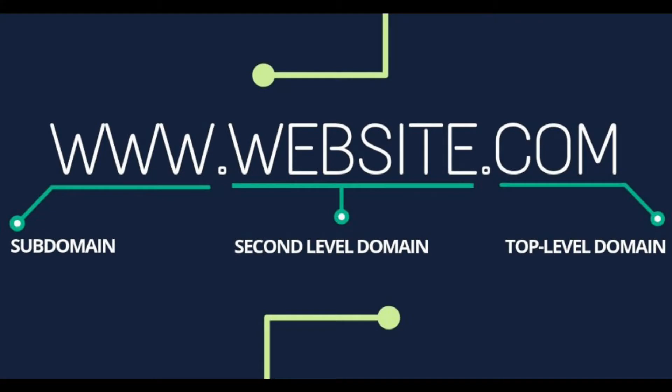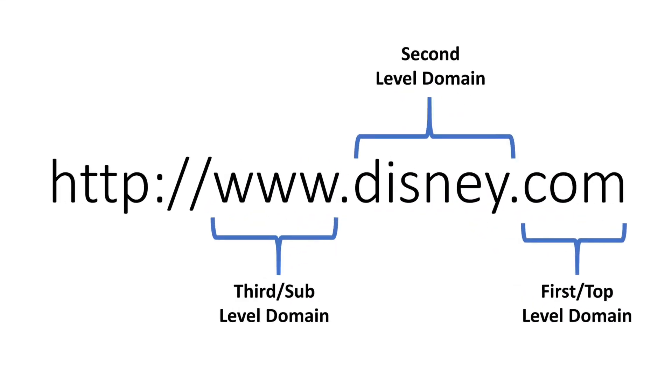So that covers first level or top level domains. Next up is second level domains. Domains of the second level are domains that follow the first level or top level domain in the hierarchy. For example, the 'Disney' in Disney.com is the second level domain. It's the name of the company, seller, or entity that registers the domain name with the registrar — really the unique identifier of the identity that owns the website.